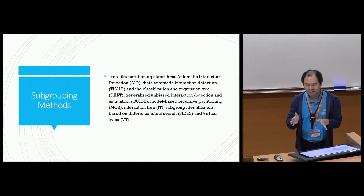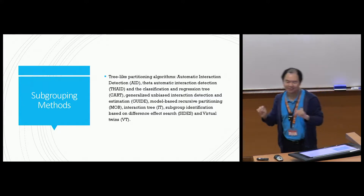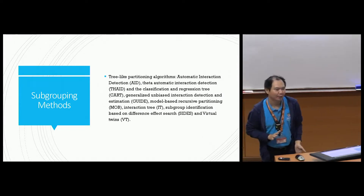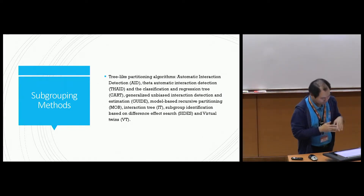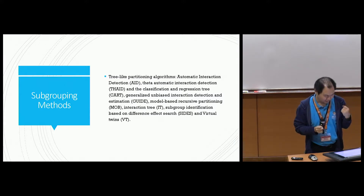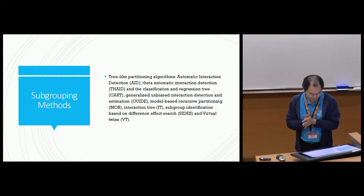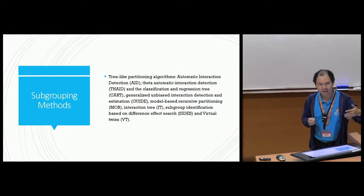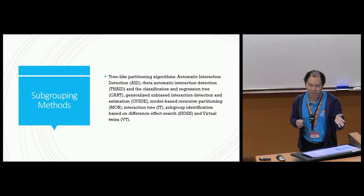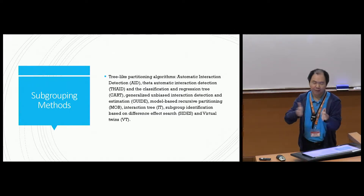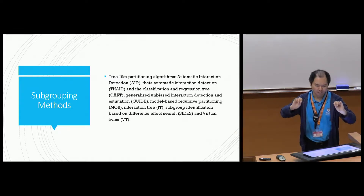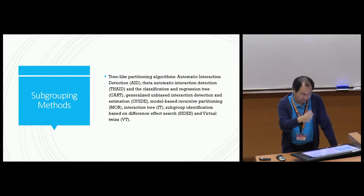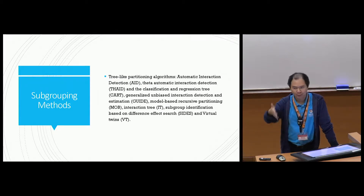Before our work, there is an ocean of publications in this area. There are already many papers published for this subgroup identification problem. Most of the earlier publications are related to decision trees — other subgroup identification methods are kind of like building a regression tree or a classification tree, using a recursive partitioning algorithm to build different nodes. You get different splits of your original sample and eventually end up with small groups used as subgroups.